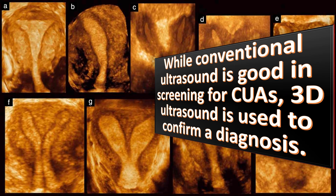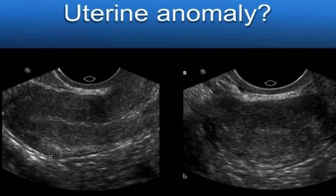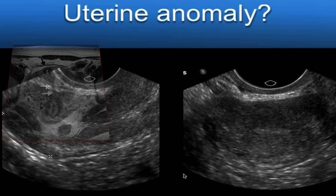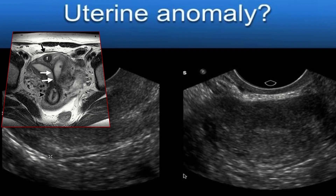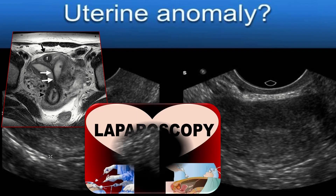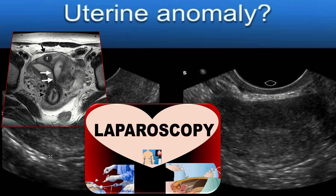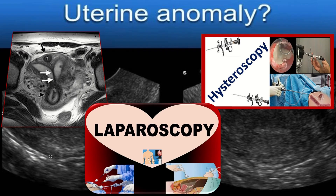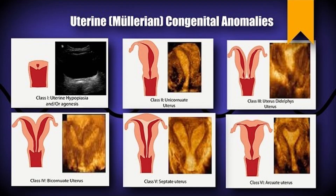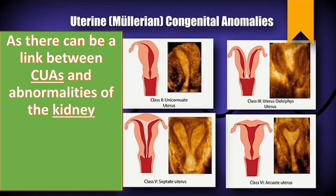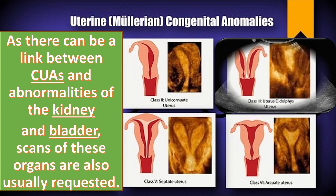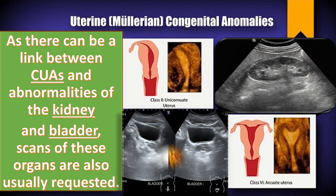While conventional ultrasound is good for screening for congenital uterine anomalies, 3D ultrasound is used to confirm a diagnosis. If a complex uterine abnormality is suspected, MRI scanning may also be used in combination with laparoscopy, in which a camera is inserted through the abdominal cavity, and hysteroscopy, where the camera is placed in the uterine cavity. As there can be a link between congenital uterine anomalies and abnormalities of the kidney and bladder, scans of these organs are also usually requested.